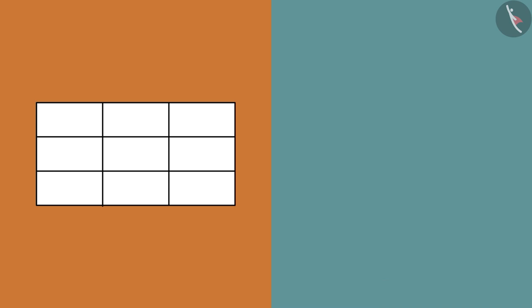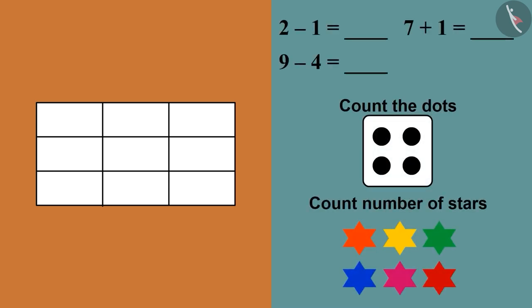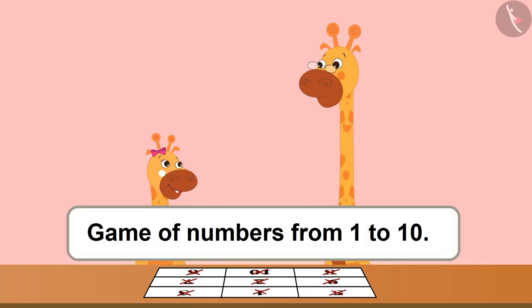Excellent. Friends, now it's your turn to play this bingo game like us. Make these 9 boxes on a piece of paper just like this. Questions are written on the screen for you. Children, in this video, we learned to play a fun game out of numbers from 1 to 10.